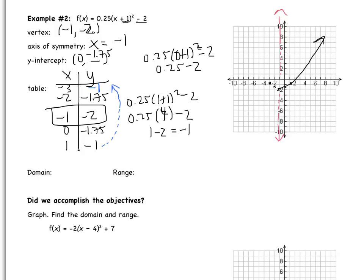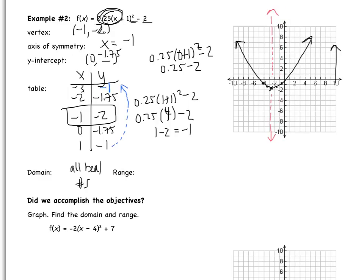Now I'm ready to graph. Yours should look much more accurate than mine, but it's difficult to do this on an iPad. Does it make sense that my parabola is opening up? I have 0.25 in front of the x — positive, so my graph should be opening up. Domain is the values that x can take on, which is all real numbers. For the range, as I go up y increases, and as I go down it stops at y equals negative 2. So my range is y is greater than or equal to negative 2.